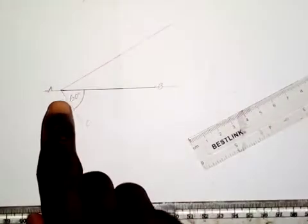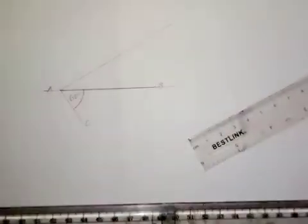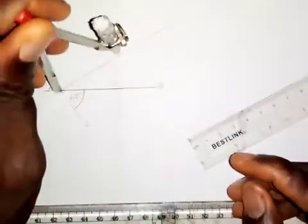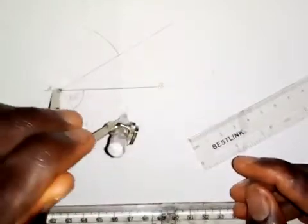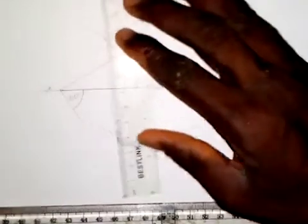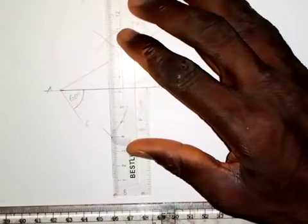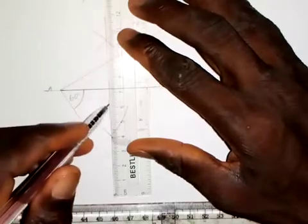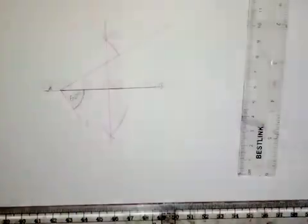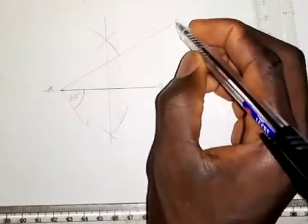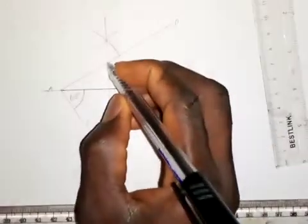The next thing is to bisect the base of the triangle, that is AB. By setting the compass on line AB, I make arcs from A, then with the same radius at B, I make arcs here as well. I draw the bisector. The bisector intersects line AD at this point, which I'll call point O.